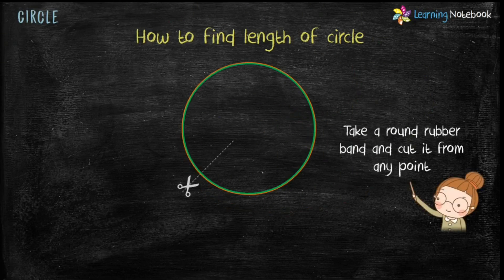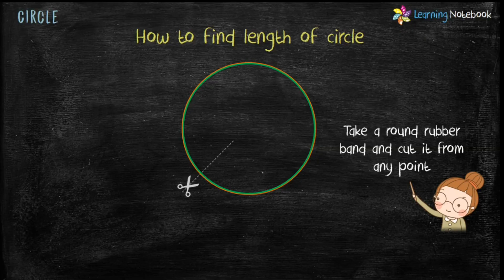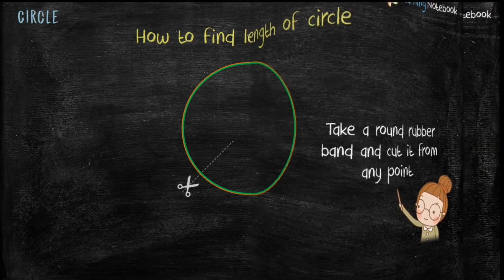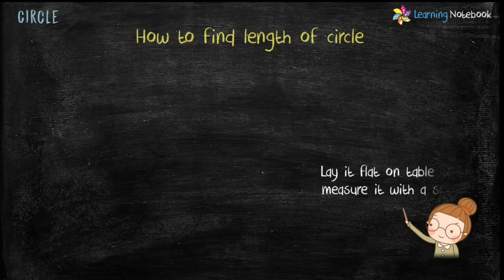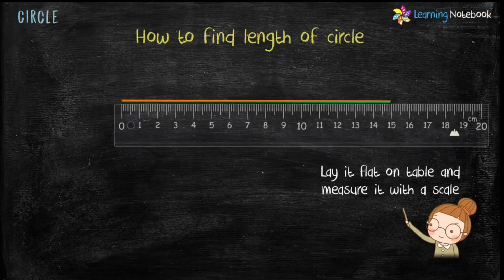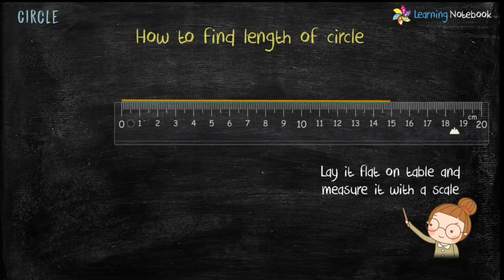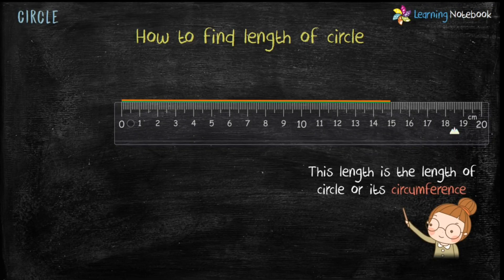Take a round rubber band and cut it from any point. You may take your parents' help for this. Lay the cut rubber band flat on the table and measure it with a scale. This length is the length of a circle or its circumference. So here, the length of the rubber band or its circumference is 15 cm.